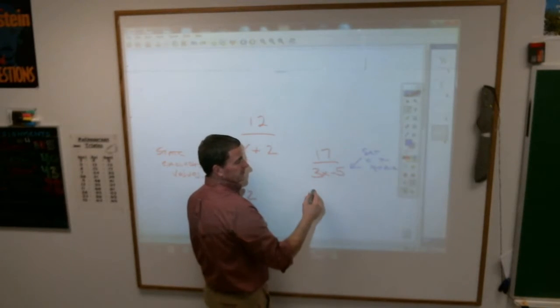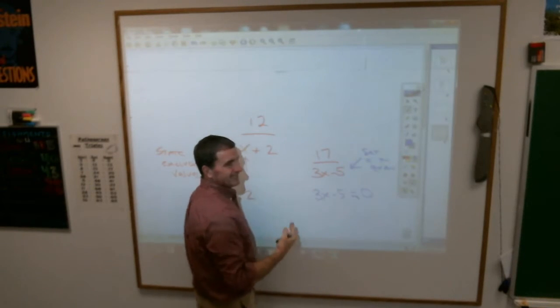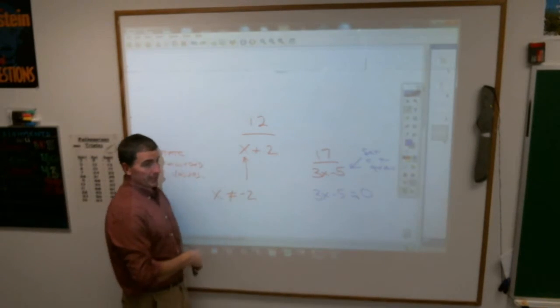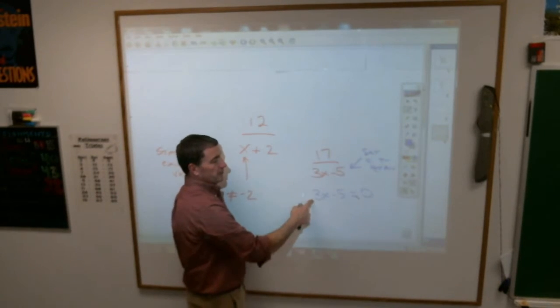you just have to set equal to zero. Which means, take this 3x minus 5, and say, when will this be zero? Make an equation out of it. Solve it for x, and that's what x can't be, because if you put that in for x, you get zero. How would I solve this?